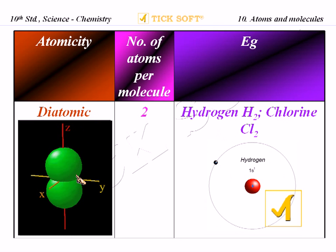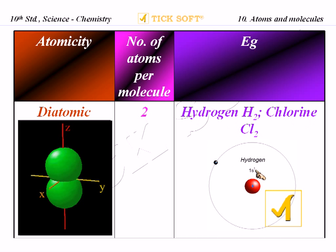Examples of diatomic molecules include hydrogen H2 and chlorine Cl2. As we studied earlier, hydrogen does not have independent existence — it always combines with another atom, hence H2. Looking at the picture of hydrogen, it has one electron in a circular path and one proton at the center.